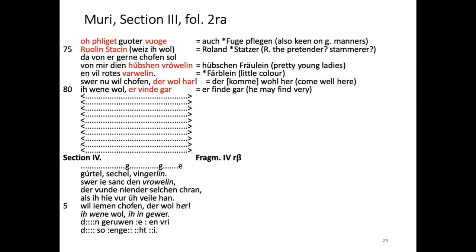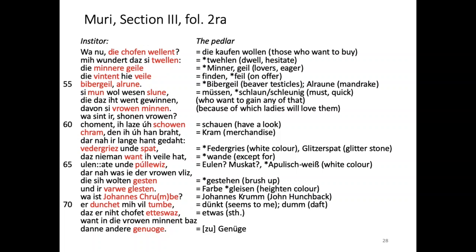Then comes a number of missing lines which we can reconstruct because we know how big the sheets would have been and how many lines are missing. In the next fragment he's still at his sales pitch with 'gulthul, zeckel, fingalien' - so that would have gone on just a bit longer.